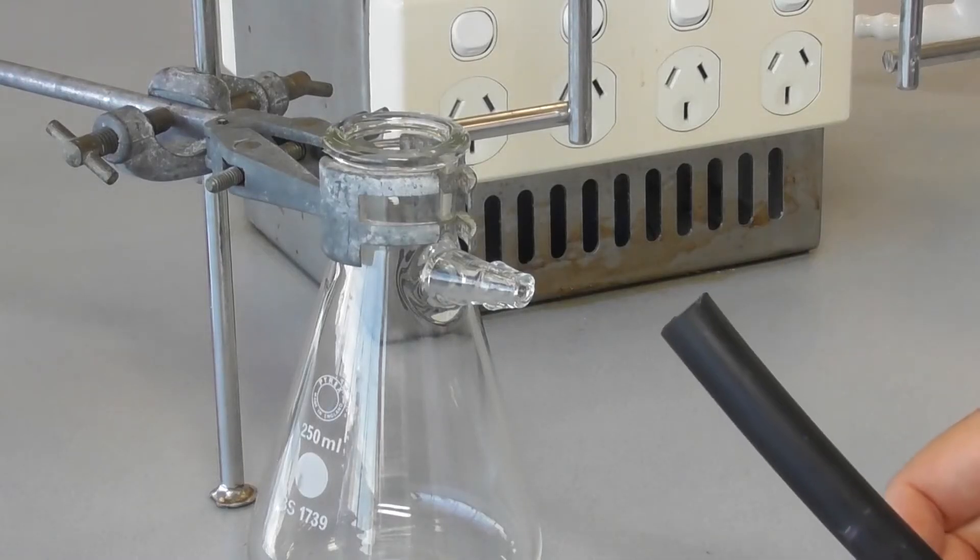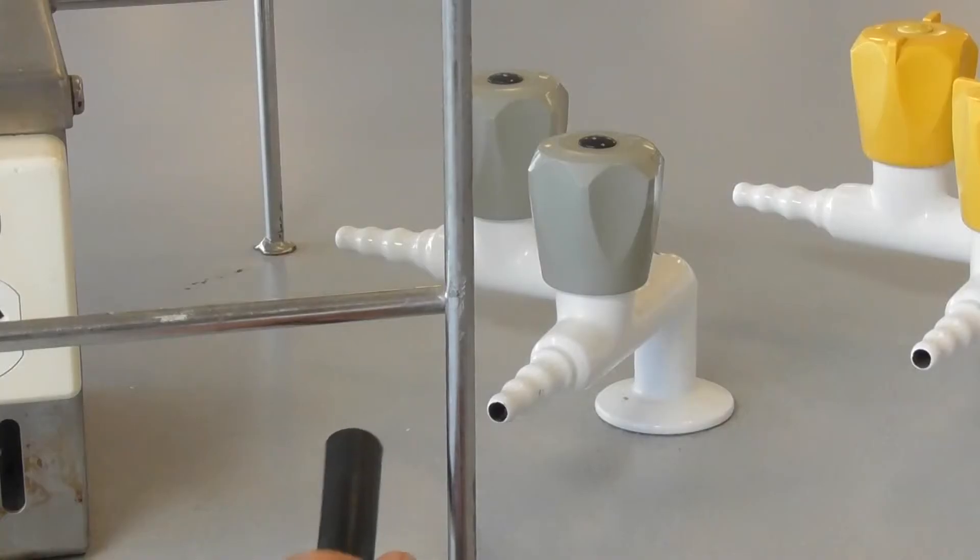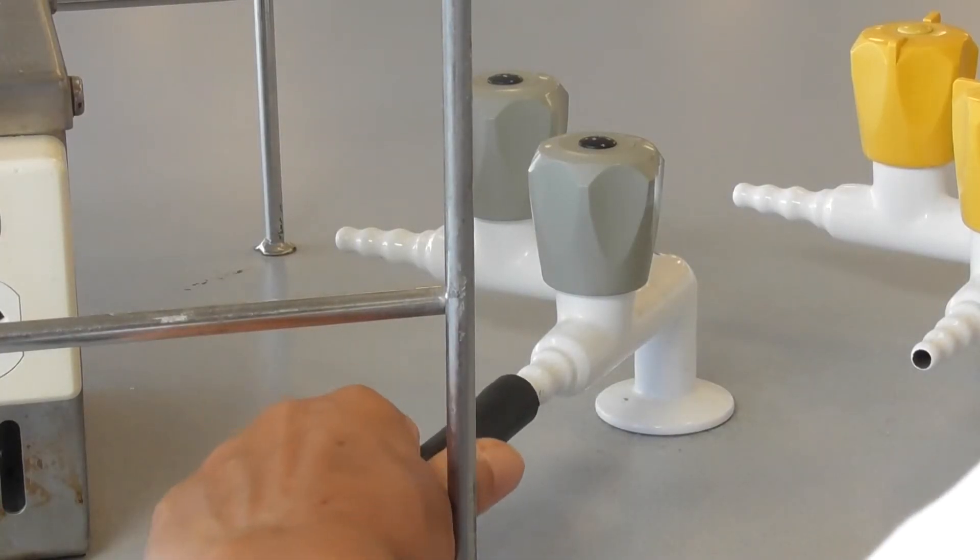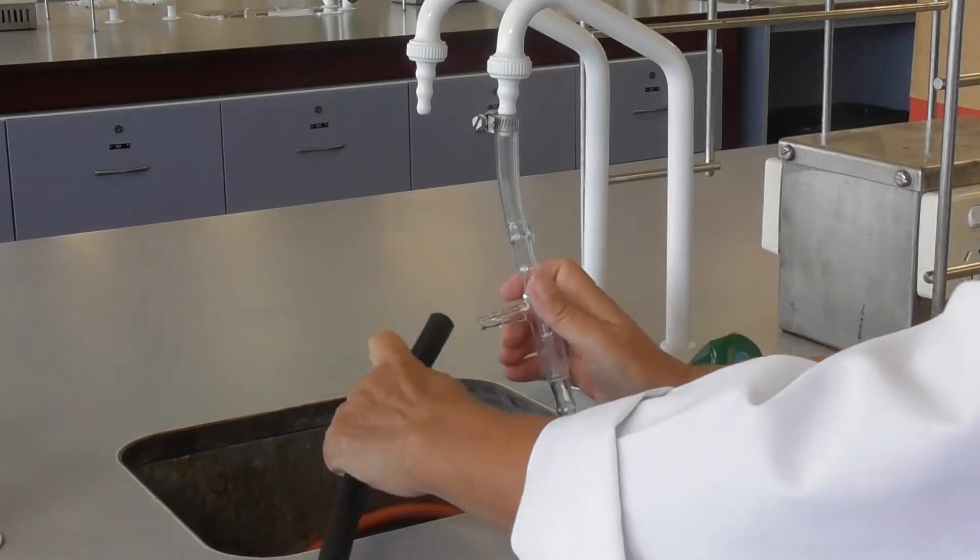Connect the vacuum hose to the short tube on the flask. Connect the other end of the hose to a vacuum source which will generally be a vacuum tap or an aspirator.